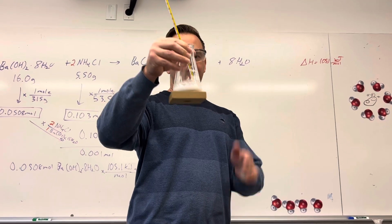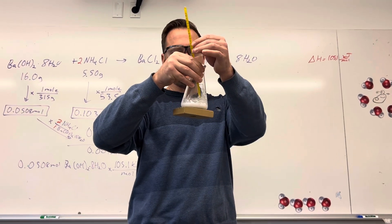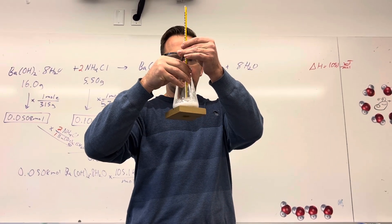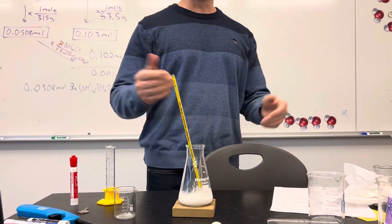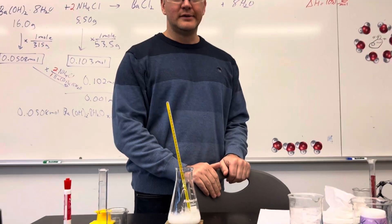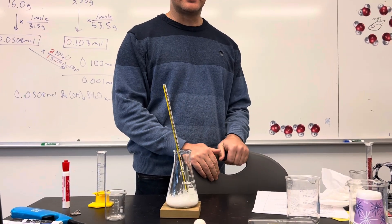So it's stuck and if you feel it, it's really cold. If you actually measure the temp, it is negative five degrees Celsius in here, below freezing, and that's why the Erlenmeyer flask stuck to the wooden block.